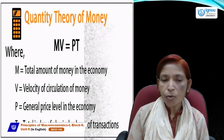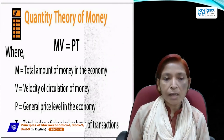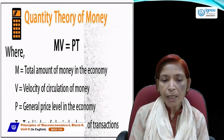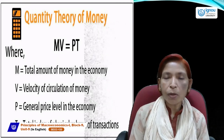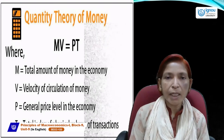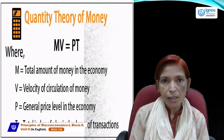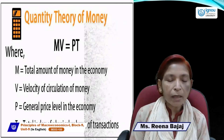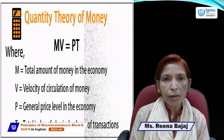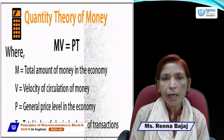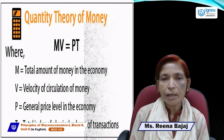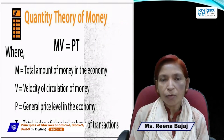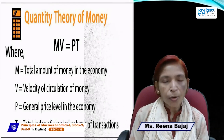Here M is the total amount of money in the economy; V is the velocity of circulation of money, also known as the speed of money; P is the general price level; and T is the total index of physical volume of transactions. Money is a medium of exchange — all goods and services can be bought or sold with money. T denotes transactions, the most important motive for holding money in cash form according to both classical economics and Keynes.